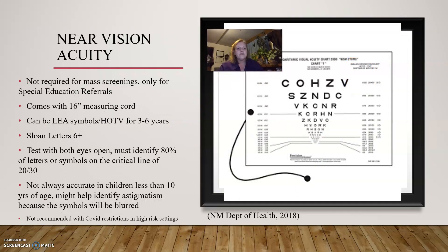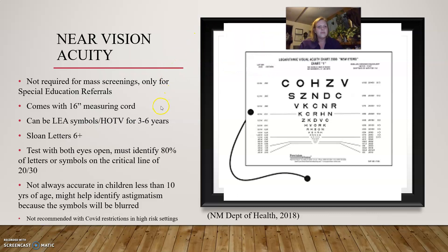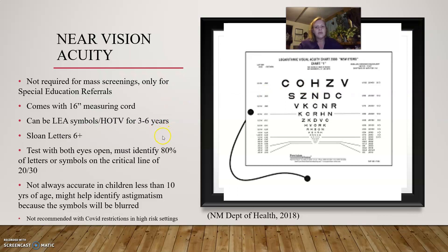For students requiring near vision acuity testing, which is not required for mass screenings, we use a chart that comes with a 16-inch measuring cord to maintain the correct distance. We hold the cord up to the student's temple. Charts include the LEAH symbols, HOTV, or Sloan letters for ages 6 and above. We test with both eyes open, and students must identify 80% of the letters or symbols on the critical line of 20/30. Near vision acuity testing is not always accurate for students age 10 and younger, but it could help identify astigmatism because symbols will appear blurred.